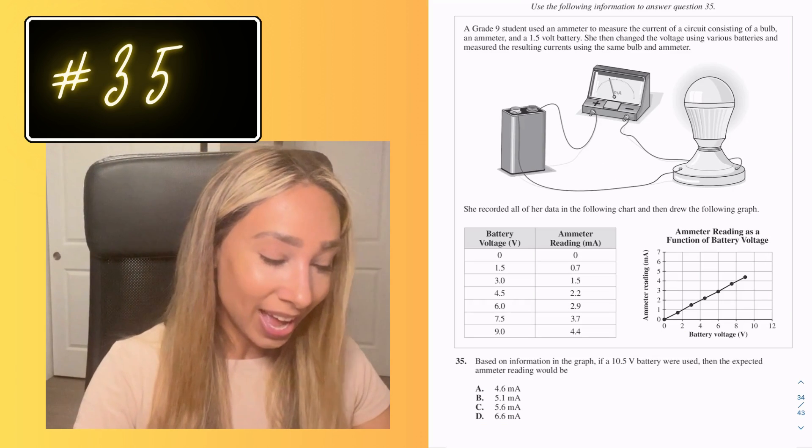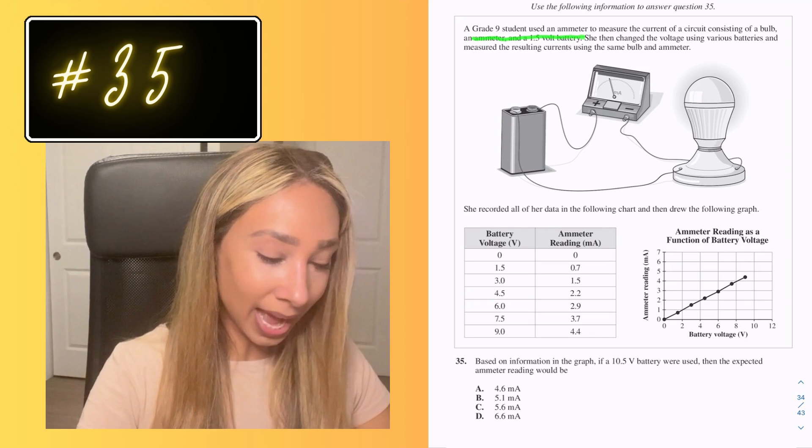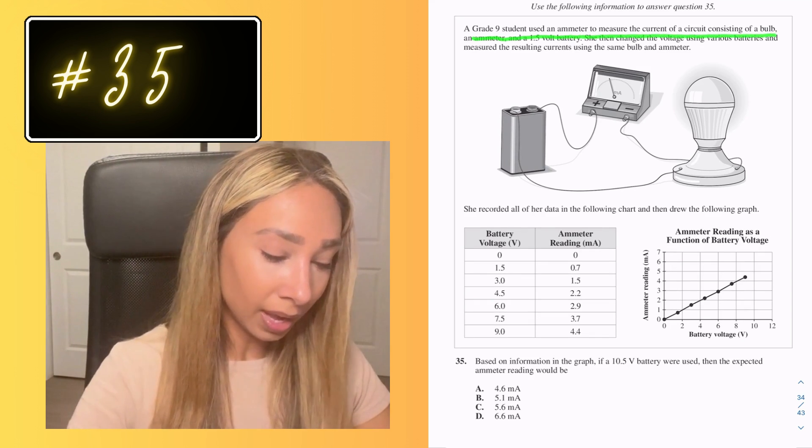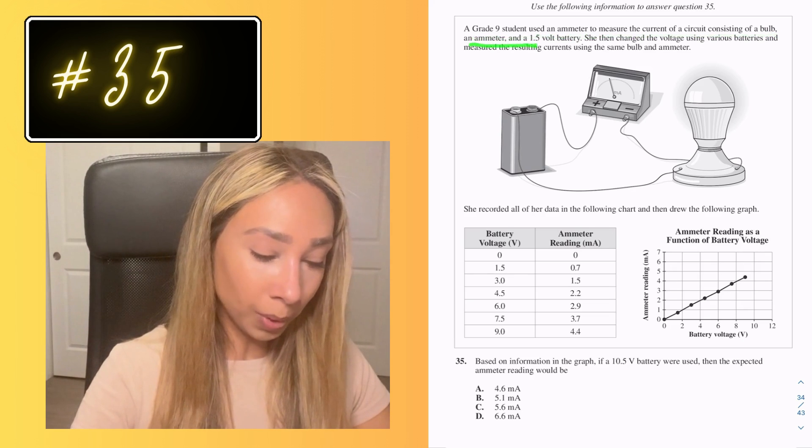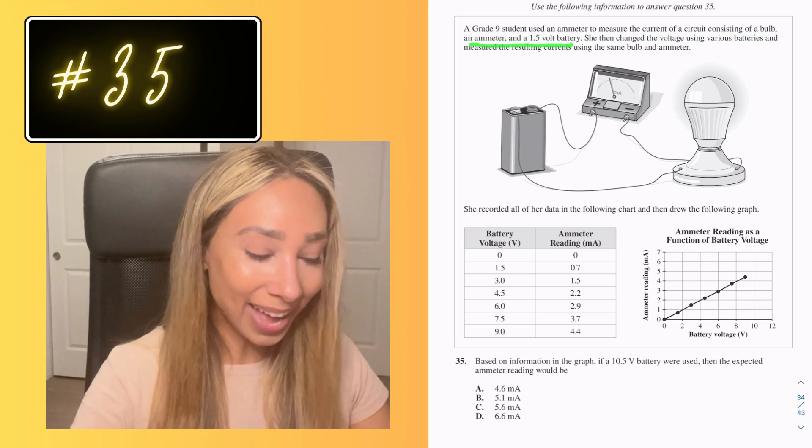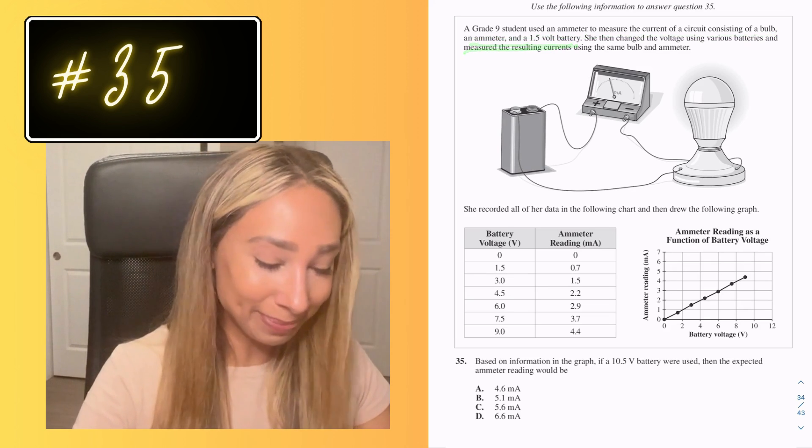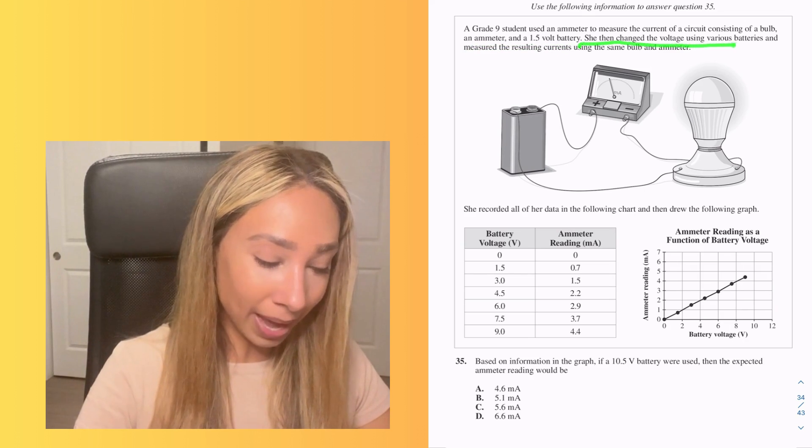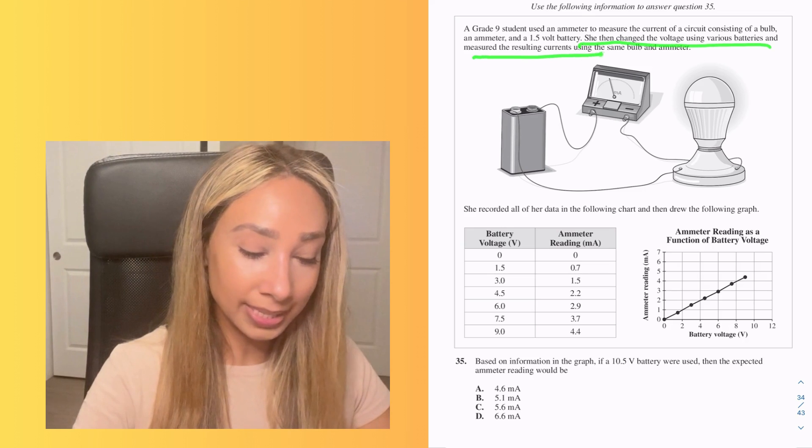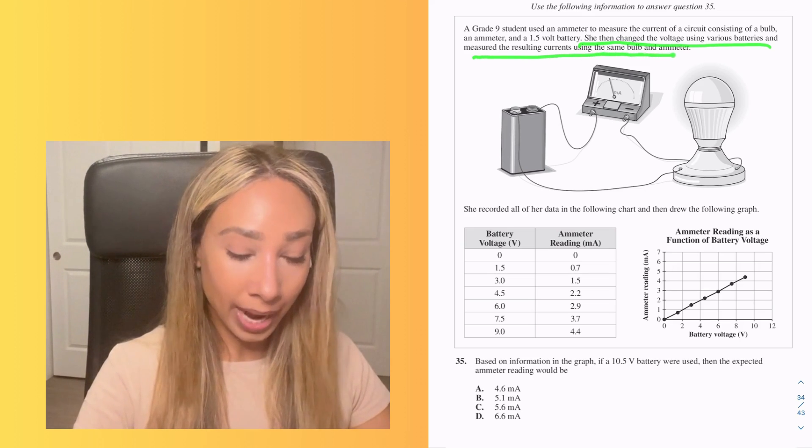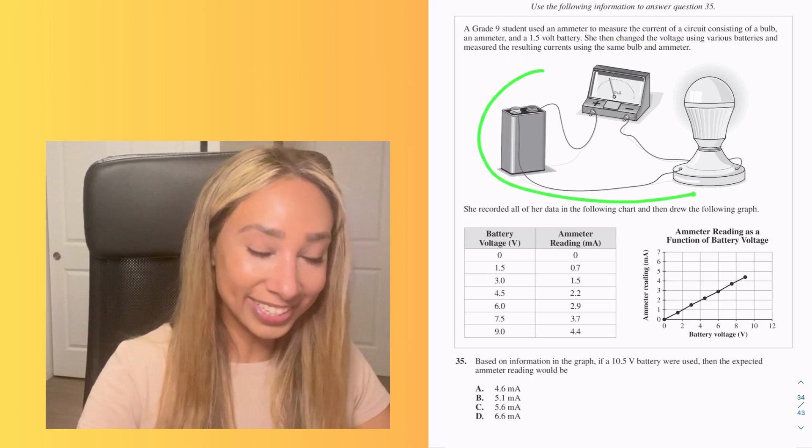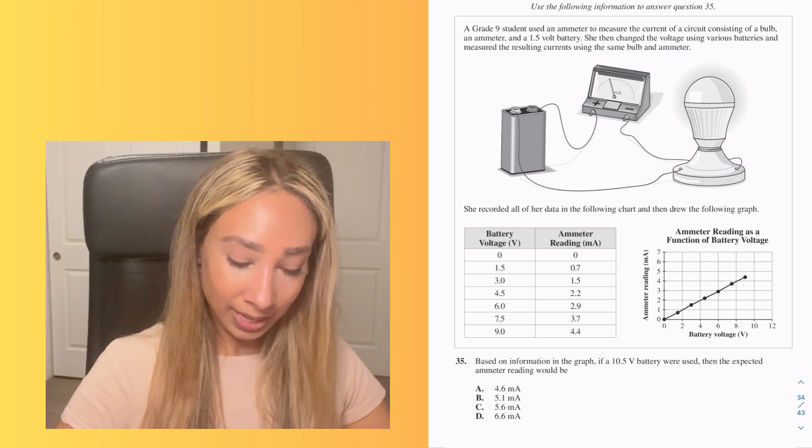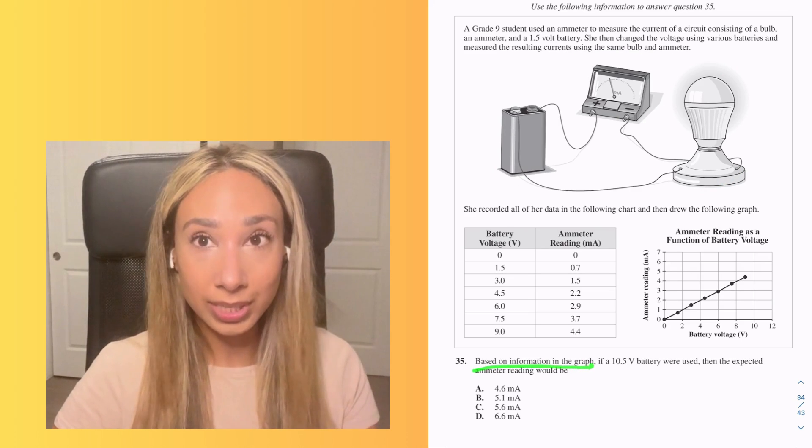Number 35. A grade 9 student used an amp meter to measure the current of a circuit consisting of a bulb and an amp meter and a 1.5 volt battery. She then changed the voltage of various batteries and measured the resulting currents using the same bulb and amp meter. So here is her circuit setup. And our question is based on the information in the graph. If a 10.5 volt battery were used, then the expected amp meter reading would be.